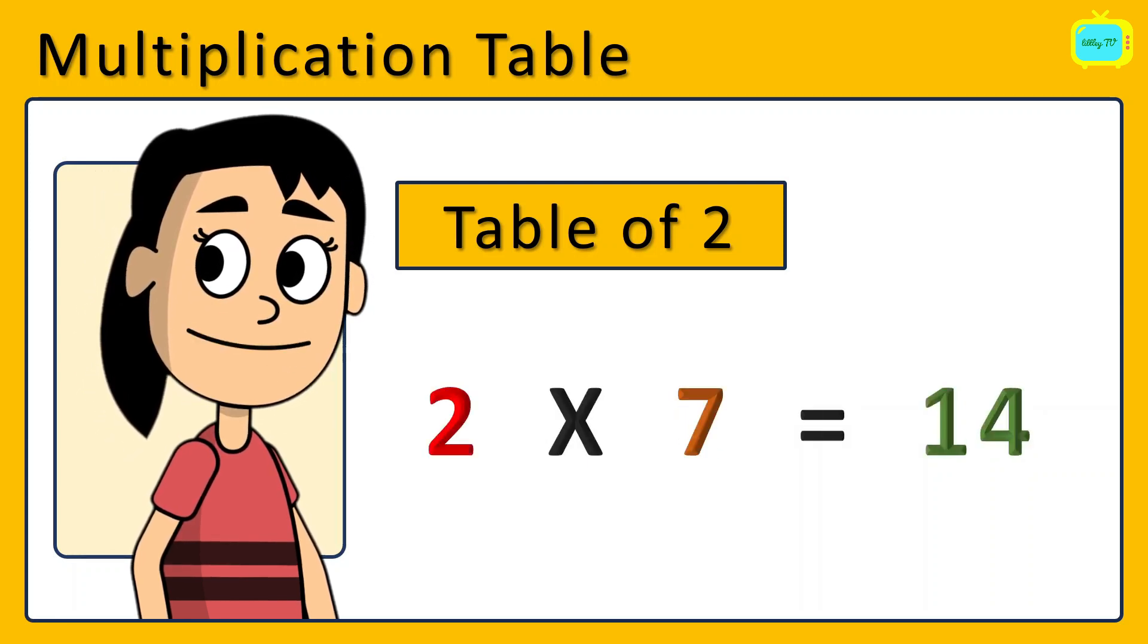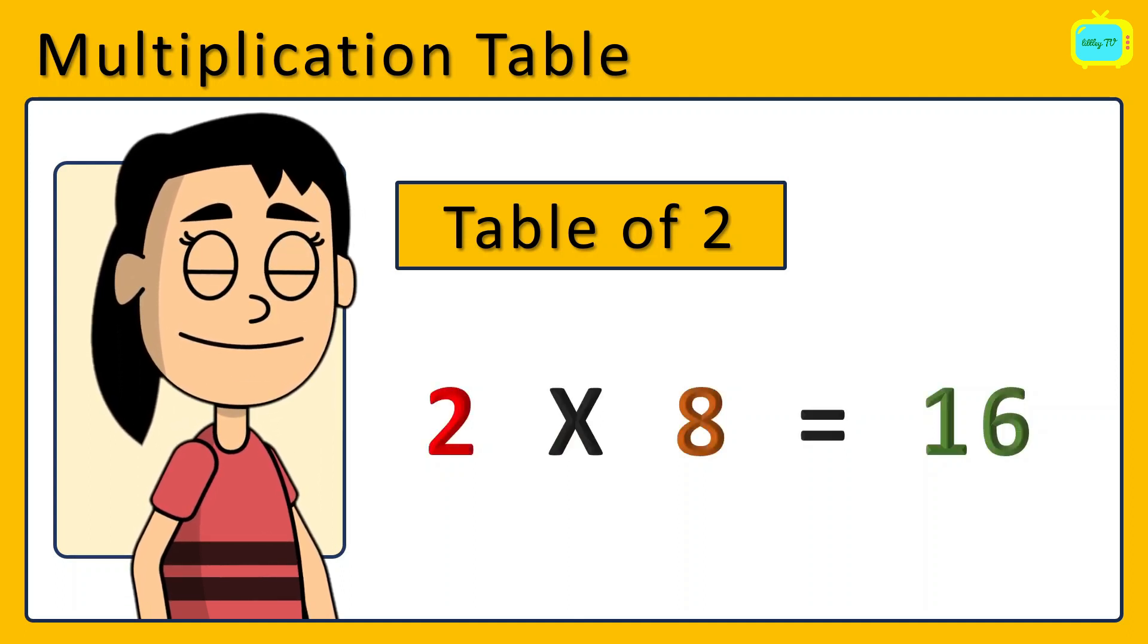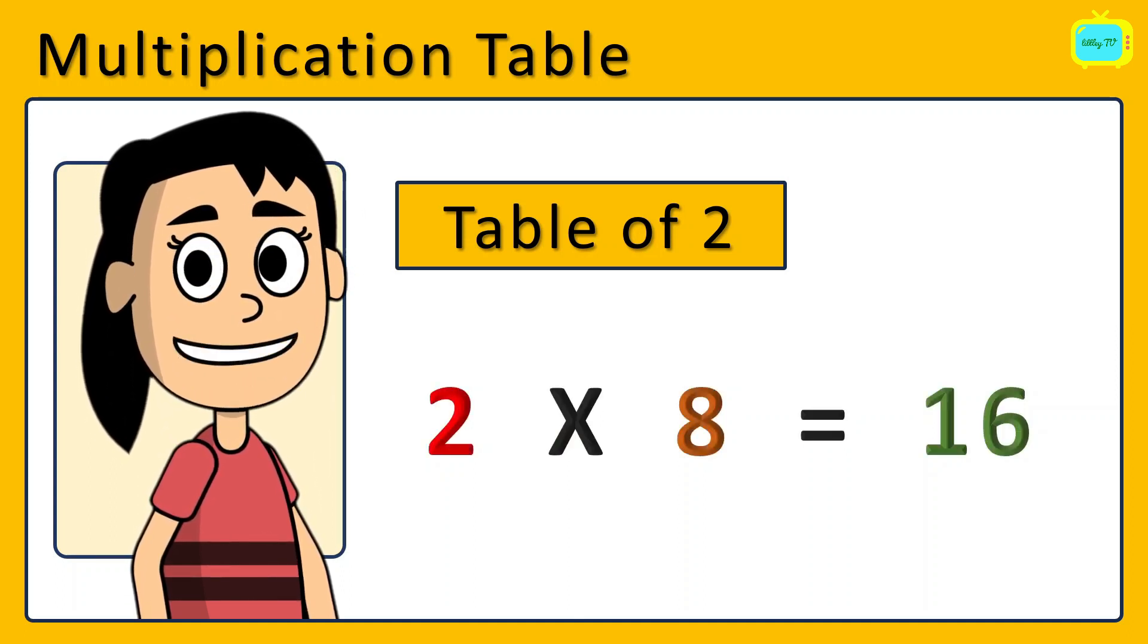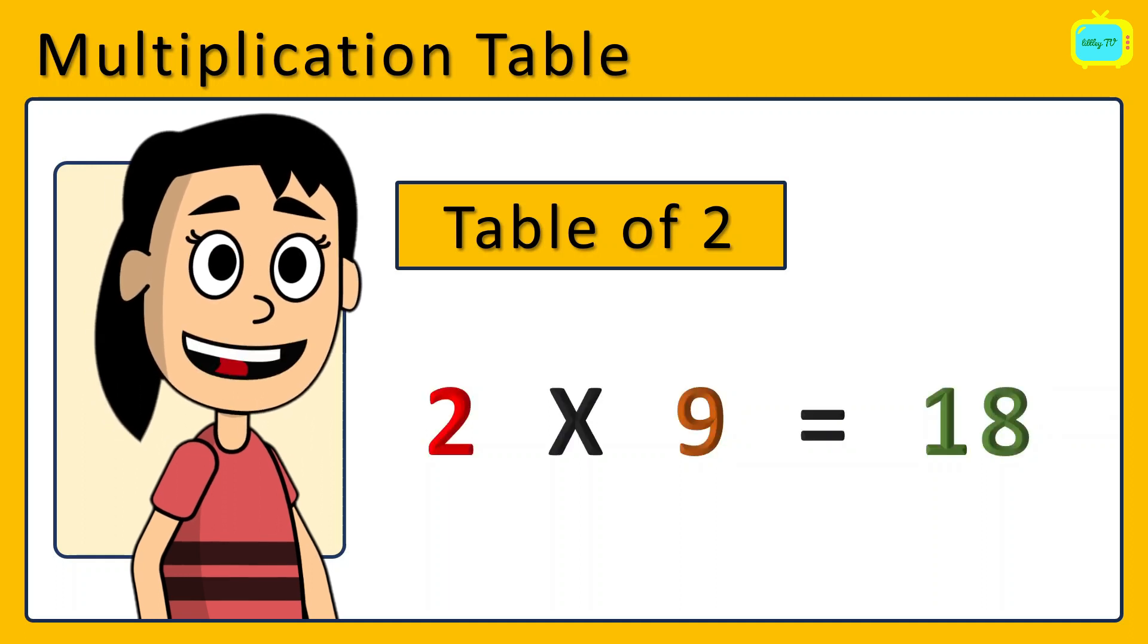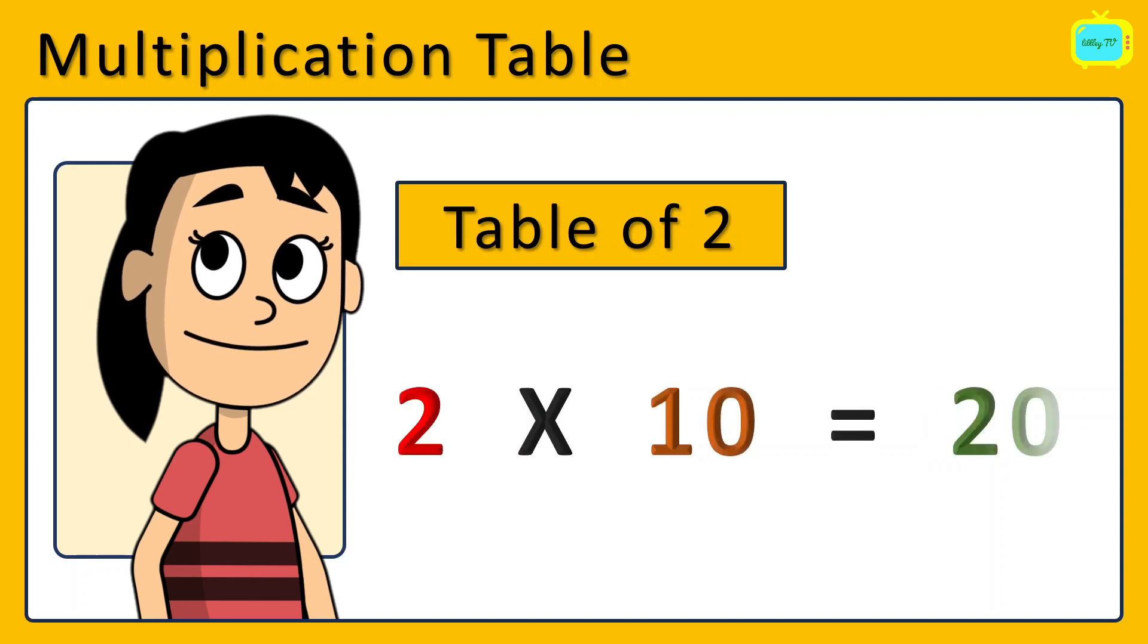2 times 7 are 14. 2 times 8 are 16. 2 times 9 are 18. 2 times 10 are 20.